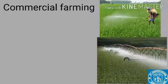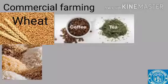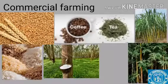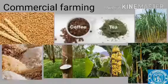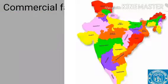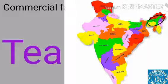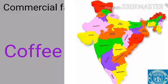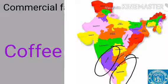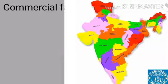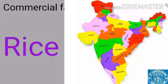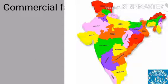Crops grown in commercial farming include wheat, rice, tea, coffee, rubber, sugarcane, bamboo, and banana. We find banana in South India, tea in Assam and North Bengal, coffee in Nilgiri Hills and Karnataka, spices in Kerala, bamboo in North East, and rice in Punjab and Haryana. These states grow crops which are used for commercial purposes.